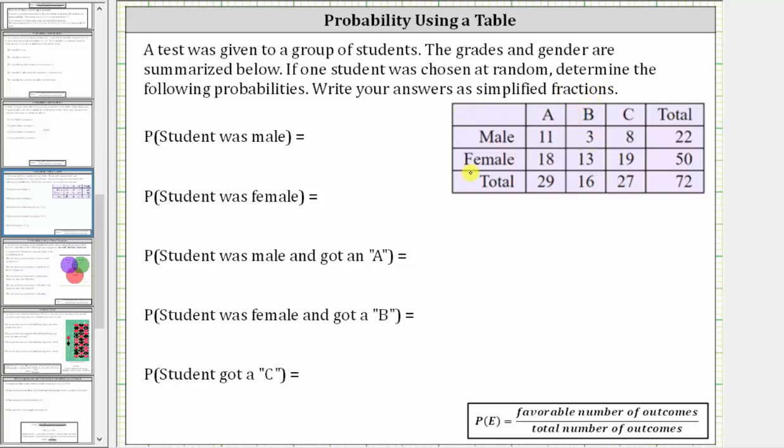Looking at the table, notice how we have the gender in rows and the grades in columns. It's also important to recognize in the bottom right-hand corner, we have a total of 72 students. Because one student is chosen at random, 72 is going to be the total number of outcomes for each probability.